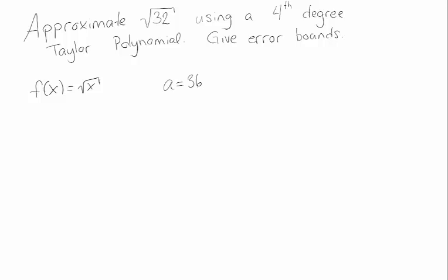In order to figure out our fourth degree Taylor polynomial, we'll have to figure out f(a), f prime of a, all the way through the fourth derivative of a, but we're also doing error bounds, so we'll also have to figure out the fifth derivative. So let's get those derivatives out.